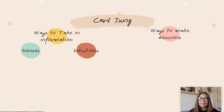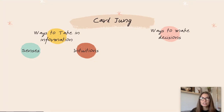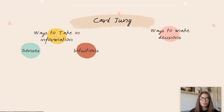He realized that you could take in information through your senses or through intuition, and those two are opposites. When you think of your senses, you're thinking your five senses — predominantly oriented toward sight, sound, and senses around you. Whereas intuition is more tuned into the implications, the 'what if,' what's going on. Everyone is oriented toward one of the two.